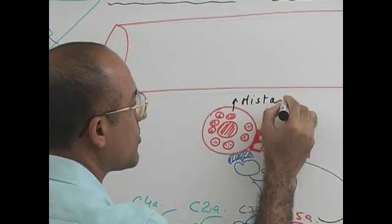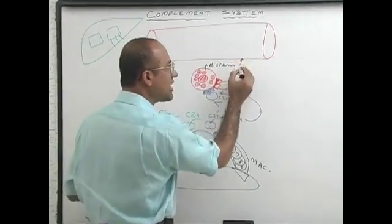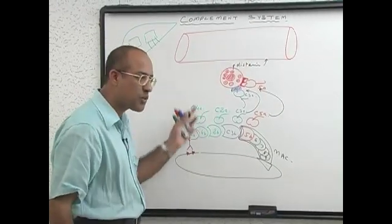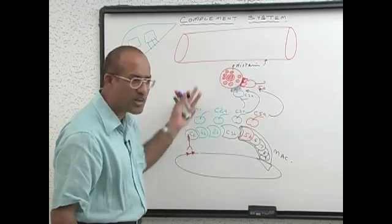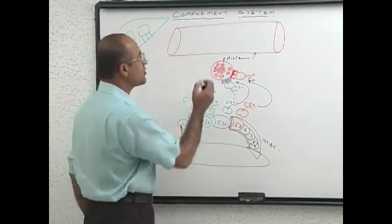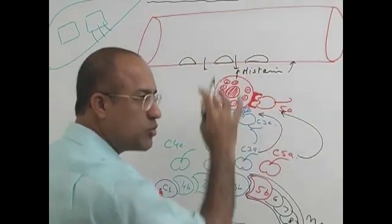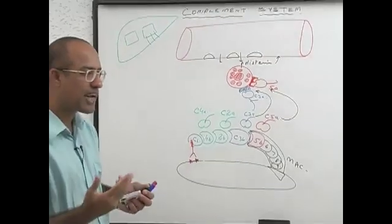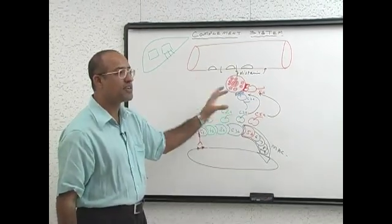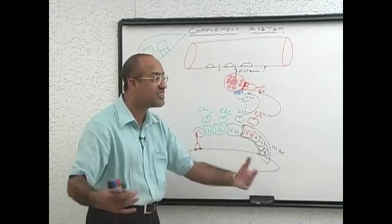When local mast cells are activated, they produce more histamine and other vasoactive products. Histamine produces vasodilation, so more blood comes to the area to fight — more neutrophils, more monocytes which convert into macrophages, more antibodies, more complement proteins coming to this area. Histamine also acts on endothelial cells so they shrink, allowing complement proteins and antibodies to ooze out.